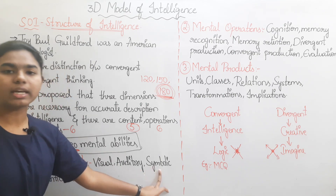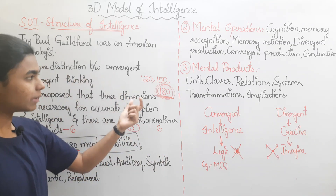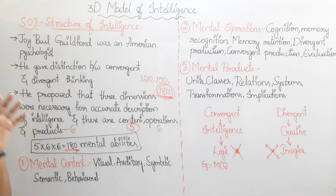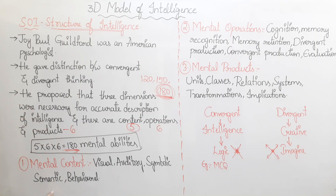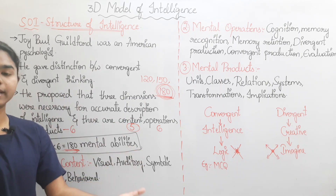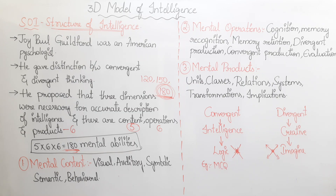Third is Symbolic — information through symbols, signs, alphabets, or numbers. Fourth is Semantic — understanding the meaning of sentences or language. Fifth is Behavioral — information derived from actions and behavior.